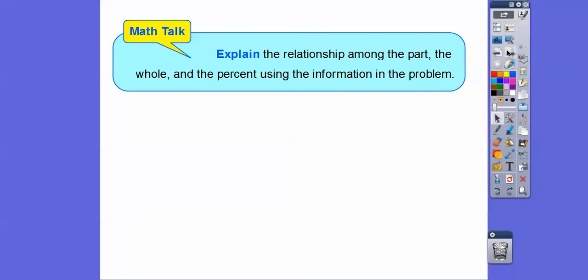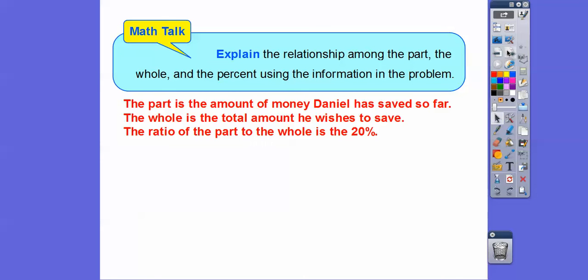Explain the relationship among the part, the whole and the percent using the information in the problem. The part is the money that Daniel has saved so far, which is the $28.